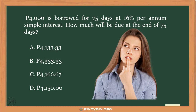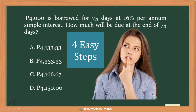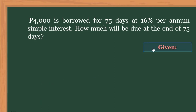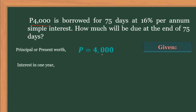We can solve this problem in four easy steps. First, we need to find the given. We should analyze and find the given first, so we can solve more easily. For our given, the first one is the principal, or the present worth, which is equivalent to 4,000. The interest in one year is 16%.